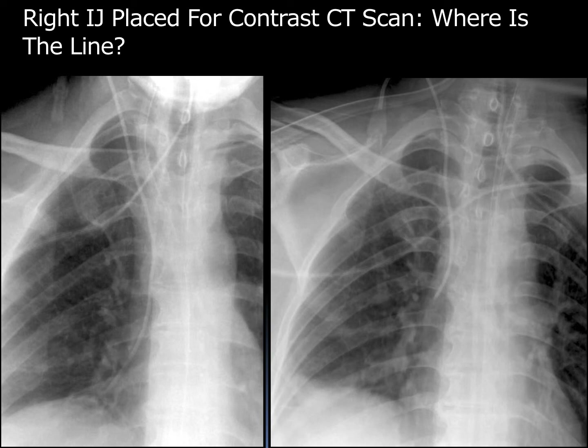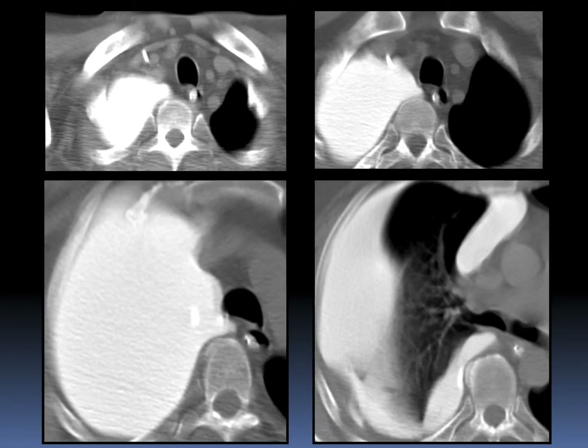The repeat radiograph shows the catheter has been retracted, but the tip still flares outward, just like a bell-bottom pair of jeans from the 70s. Remember, catheters do not obtain shapes other than the vessels that they're in. Nonetheless, the catheter was deemed appropriately positioned and the patient received intravenous contrast — or so we thought.